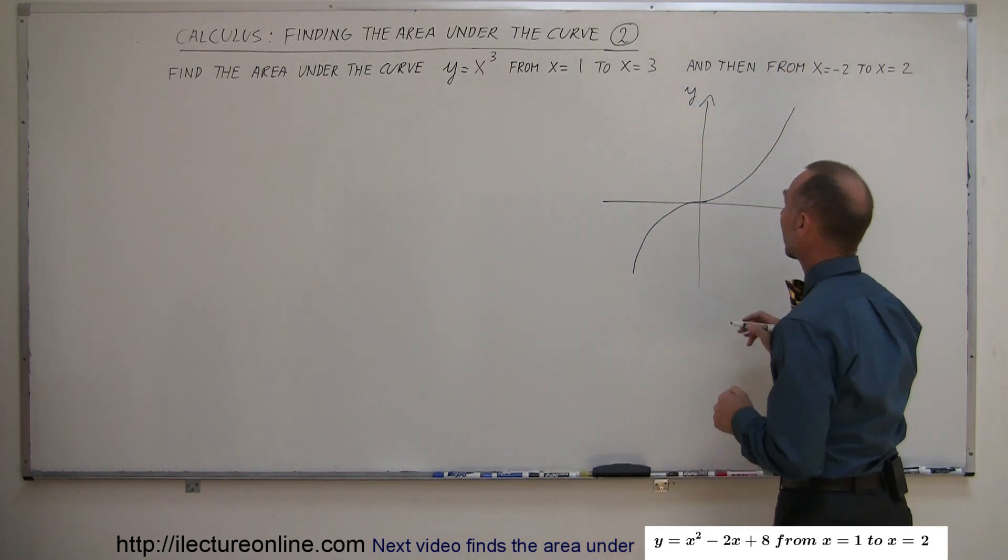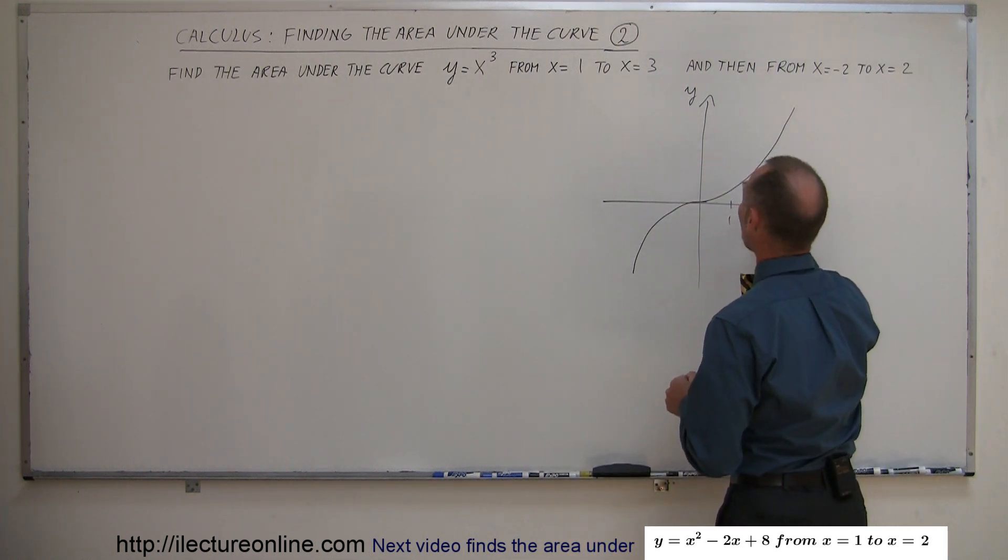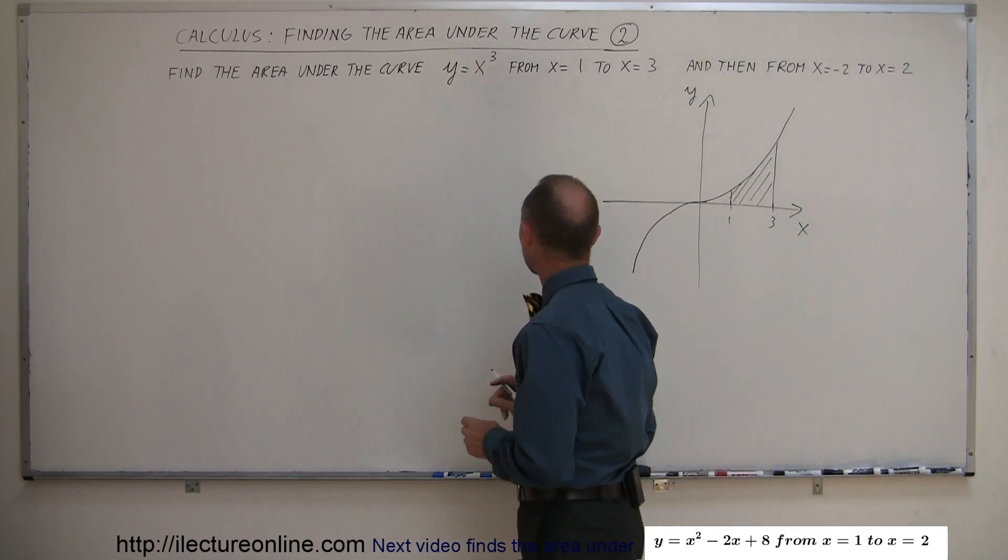We're supposed to find the area under the curve from x equals 1 to x equals 3, so we're looking to find the area right here. That's our first attempt setting the limits at x equals 1 and x equals 3.